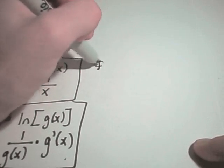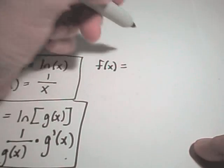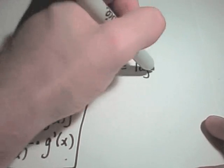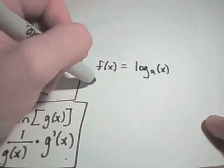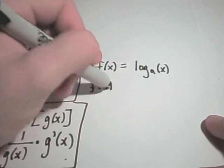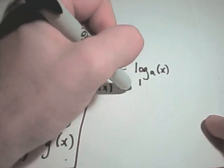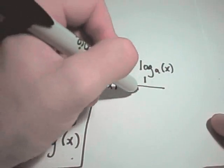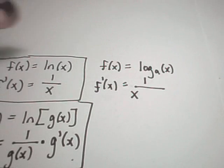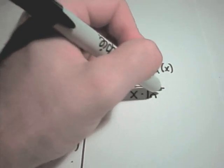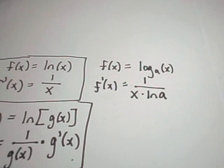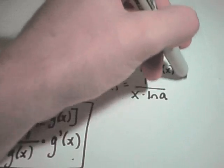Suppose your logarithm is not base e, as in natural logarithm. Suppose you have log base a of x. The derivative of that is pretty similar to the other one. You again get 1 over x, but then you multiply by the natural logarithm of whatever this base a is.